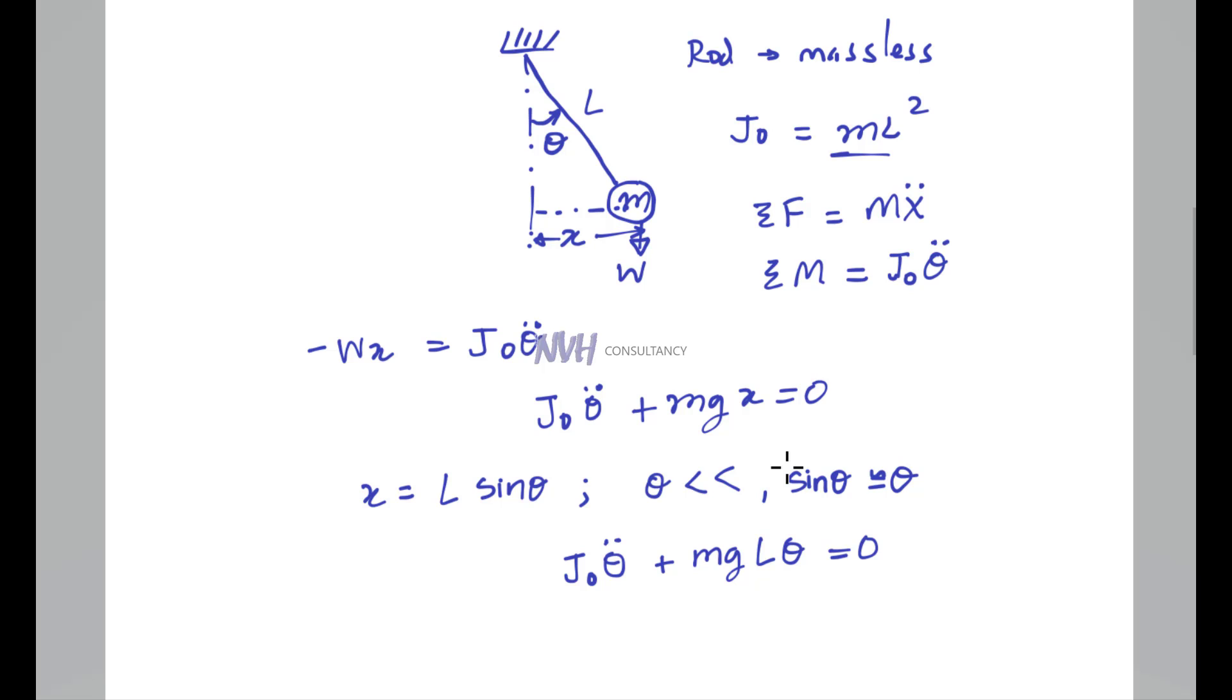So what you end up with is θ̈ plus mgL divided by ML² times θ equals zero. You can cancel out the L terms and then the M terms, so you will have g over L as the coefficient.